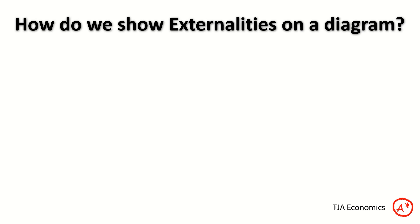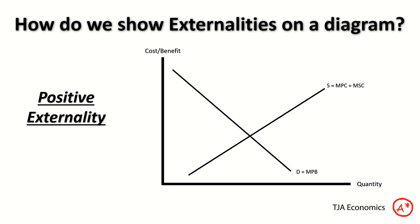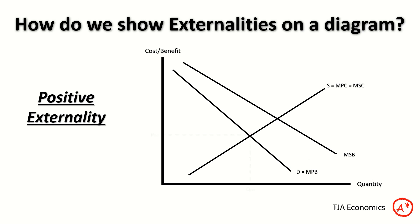We can show positive externalities on a diagram too. Again, we have cost, benefit, and quantity on the axes. We have our supply curve — this time, because we're talking about benefits, S equals marginal private cost equals marginal social cost. We have our demand curve, which is the marginal private benefit: as a consumer making decisions, I only care about the benefits to me, so my marginal private benefit is my demand curve. We then have the marginal social benefit curve, which includes the external benefit. That vertical difference is the external benefit, giving us an initial private equilibrium at P-Pri and Q-Pri.